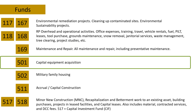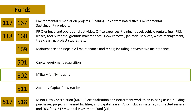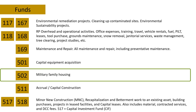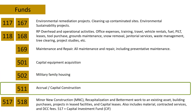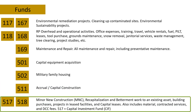The other funds start with a five, which means we're now dealing with the capital side. Fund 501 is for capital equipment acquisition — if we need to get machinery for a building, that's where the money comes from. Fund 502 helps fund our investments in military family housing, and Fund 511 is our capital construction budget, where we have money to actually build new buildings.